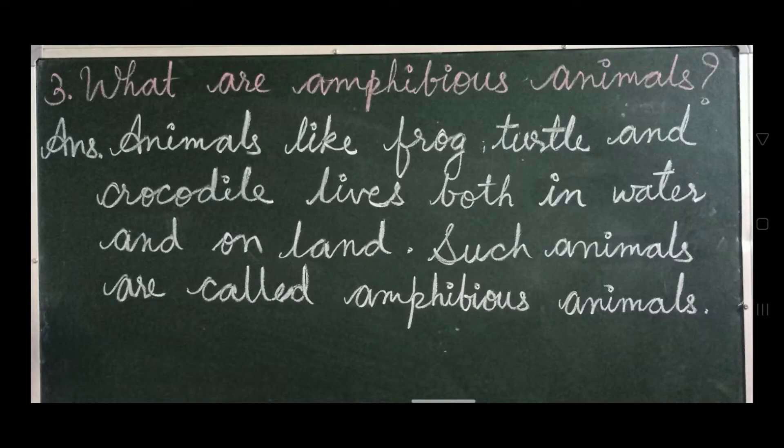Number 3: What are amphibious animals? Amphibious animals are those animals that live on land and in water. Answer: animals like frog, turtle, and crocodile live both in water and on land. Such animals are called amphibious animals.